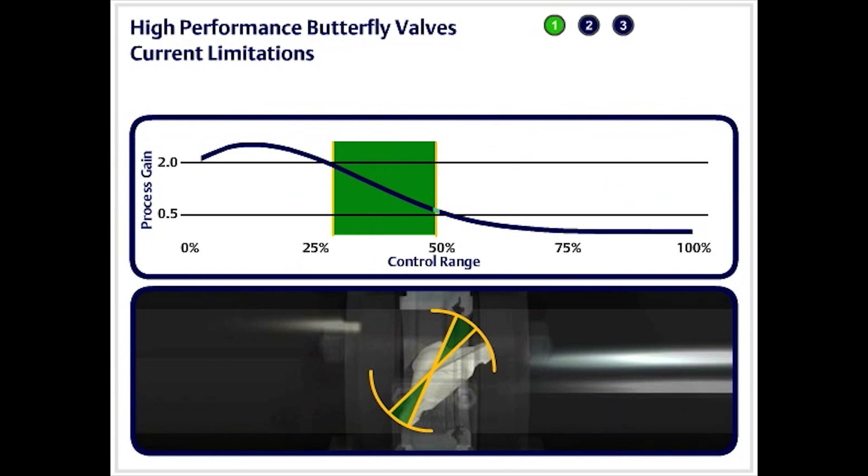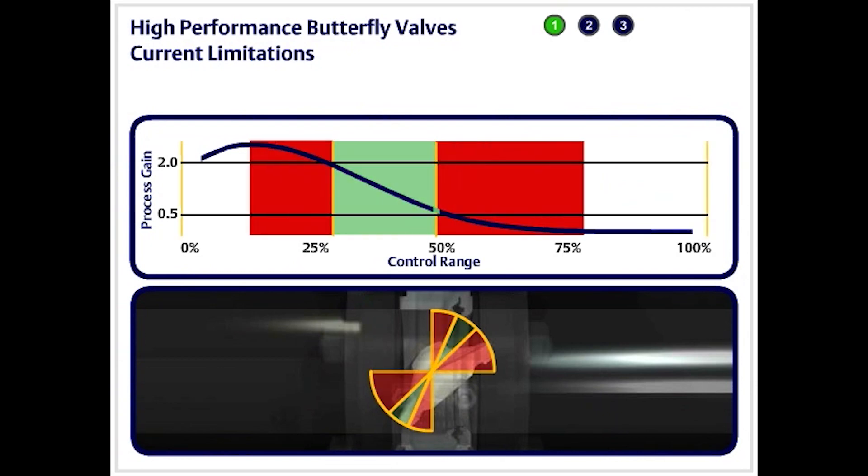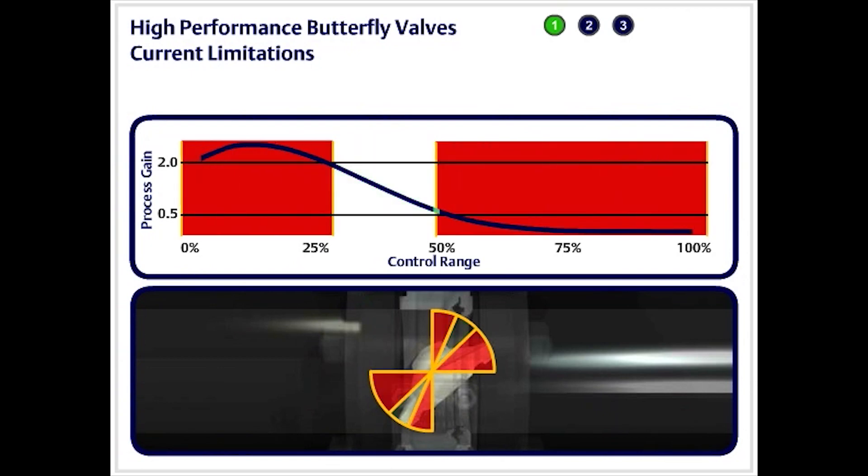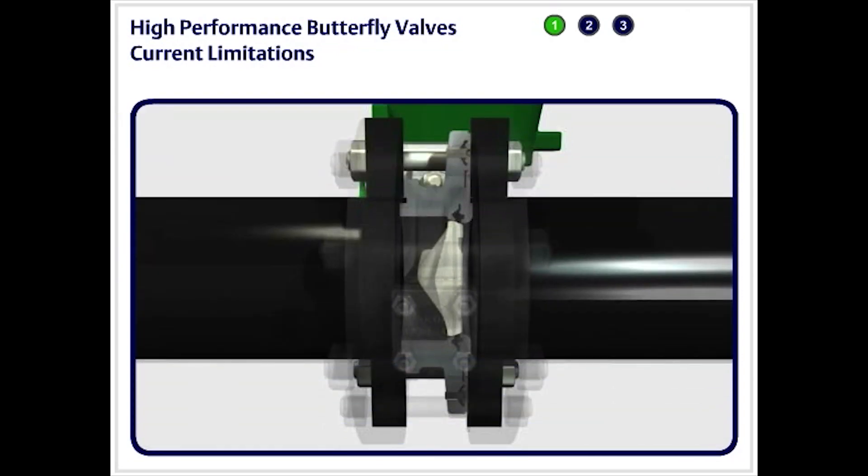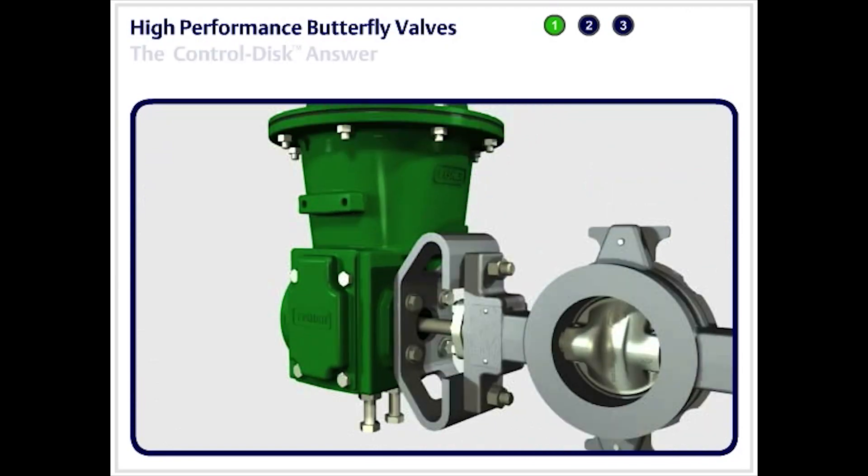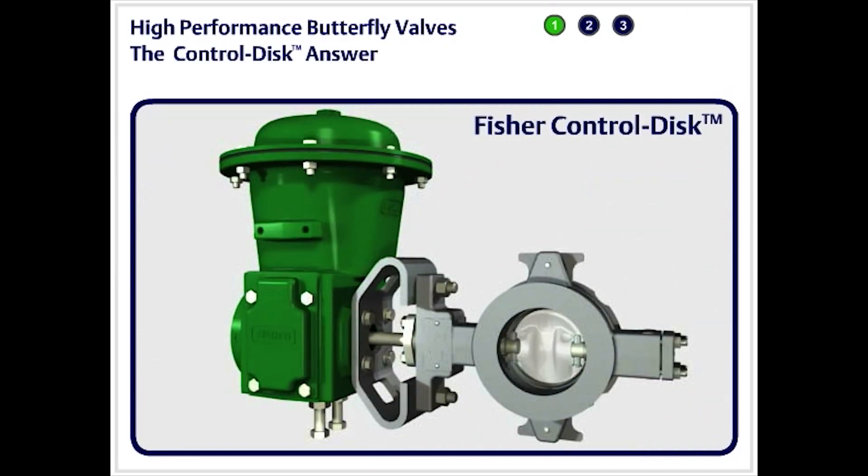When conditions call for the butterfly valve to operate outside of this range, it typically cycles at low flow and is sluggish at high flow. In these cases, the valve is often switched from auto mode to manual, or it is severely detuned, which means it provides no control at all.